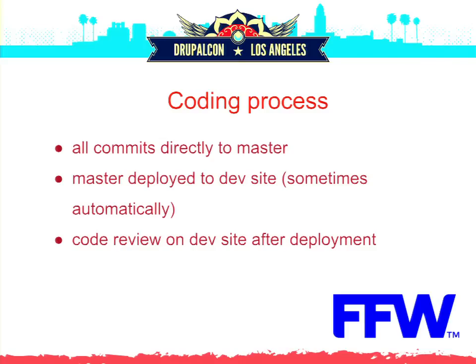Code review becomes very tricky in this setup, because when we have code it is already in master and already deployed. If we see something bad we need to roll back. And sometimes by the time we're doing code review, there have been multiple commits stacking on top of each other. We already have some dependencies, and sometimes the rollback process is fairly complicated.